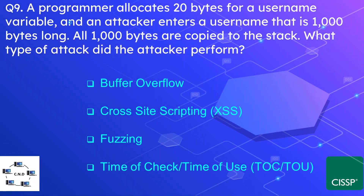Question number 9: A programmer allocates 20 bytes for a username variable, and an attacker enters a username that is 1000 bytes long. All 1000 bytes are copied to the stack. What type of attack did the attacker perform? The options are buffer overflow, cross-site scripting, fuzzing, or time-of-check/time-of-use. The correct option is buffer overflow.